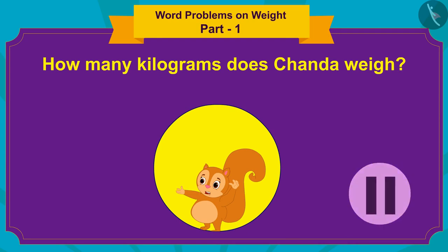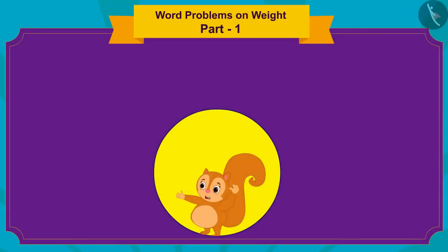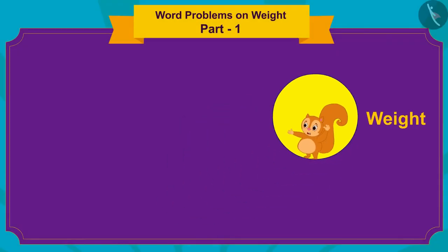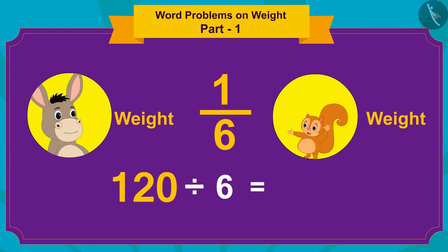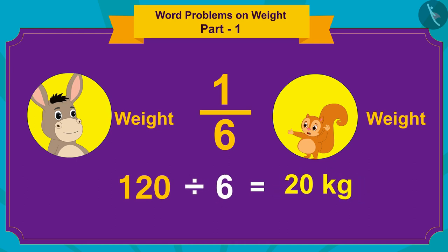If you want, you can stop the video and think about the answer. Chanda's weight is one-sixth of Bholla's weight. This means that to find the weight of Chanda, we have to divide Bholla's weight by 6. In this way, the weight of Chanda is 120 divided by 6, that is 20 kilograms.